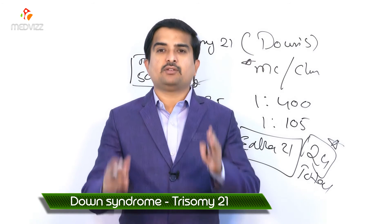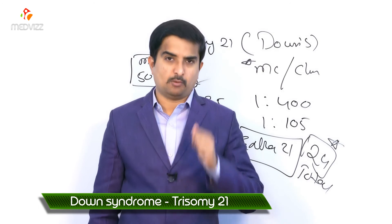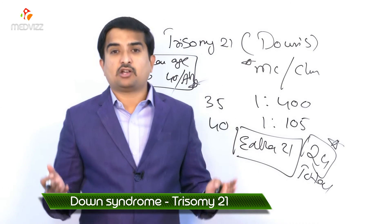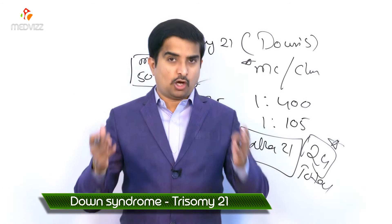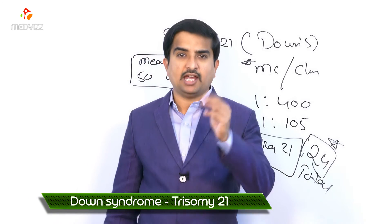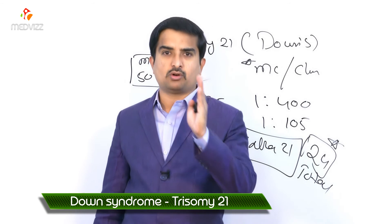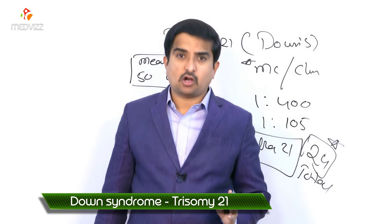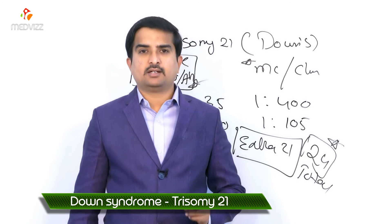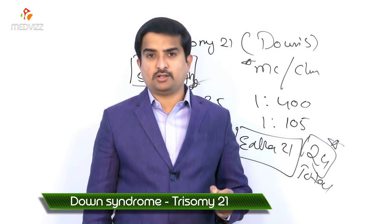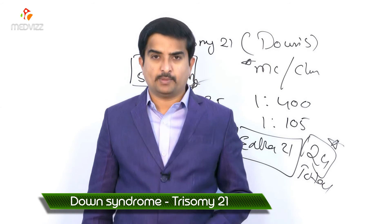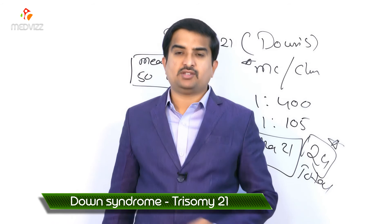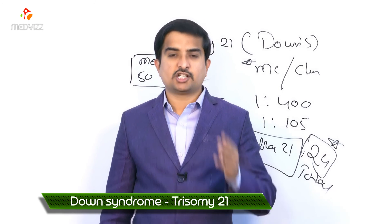Trisomy 21 patients have an increased risk of multiple complications. Congenital cardiac defects are common, including atrial septal defect and endocardial cushion defect. Gastrointestinal disorders are also common, such as duodenal atresia and stenosis.